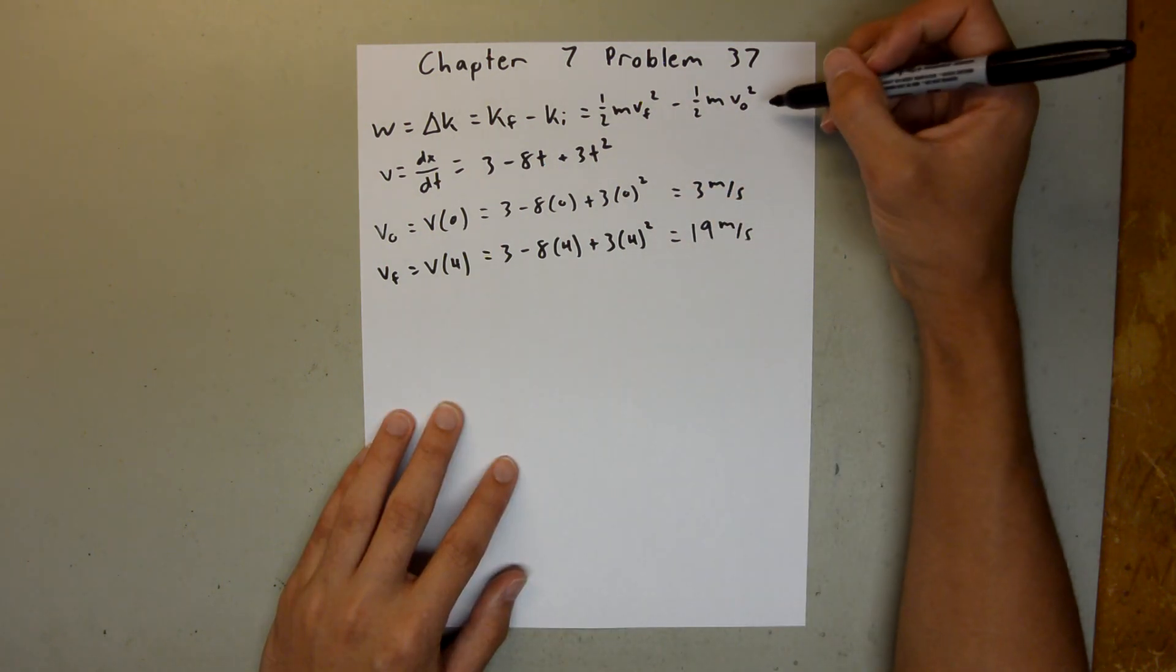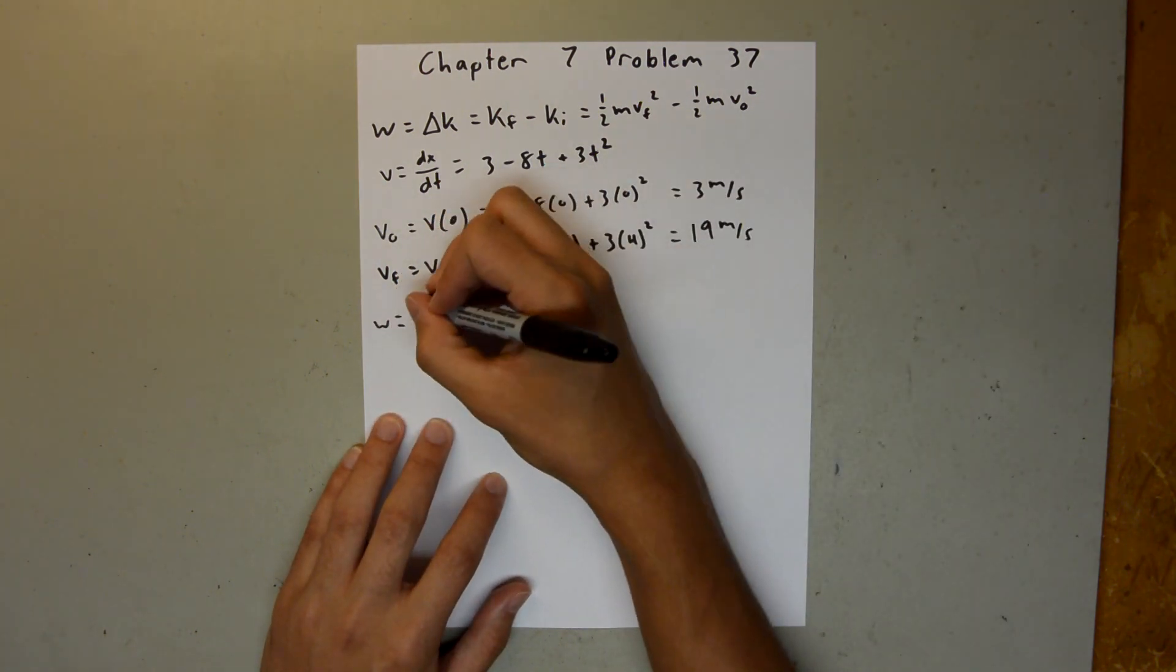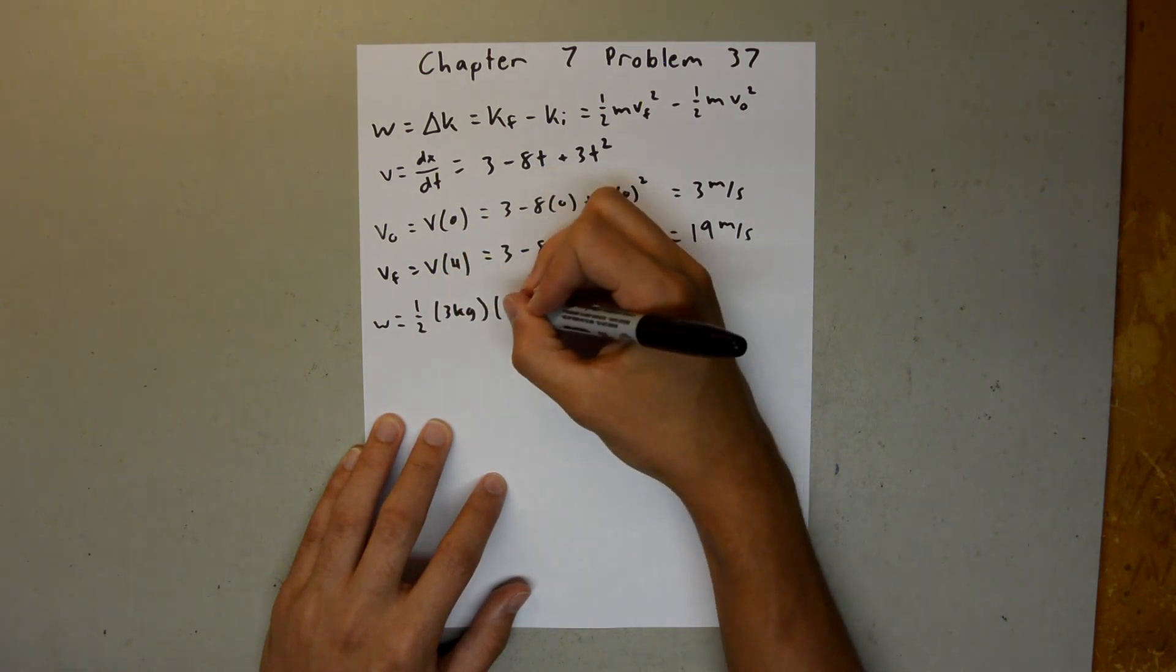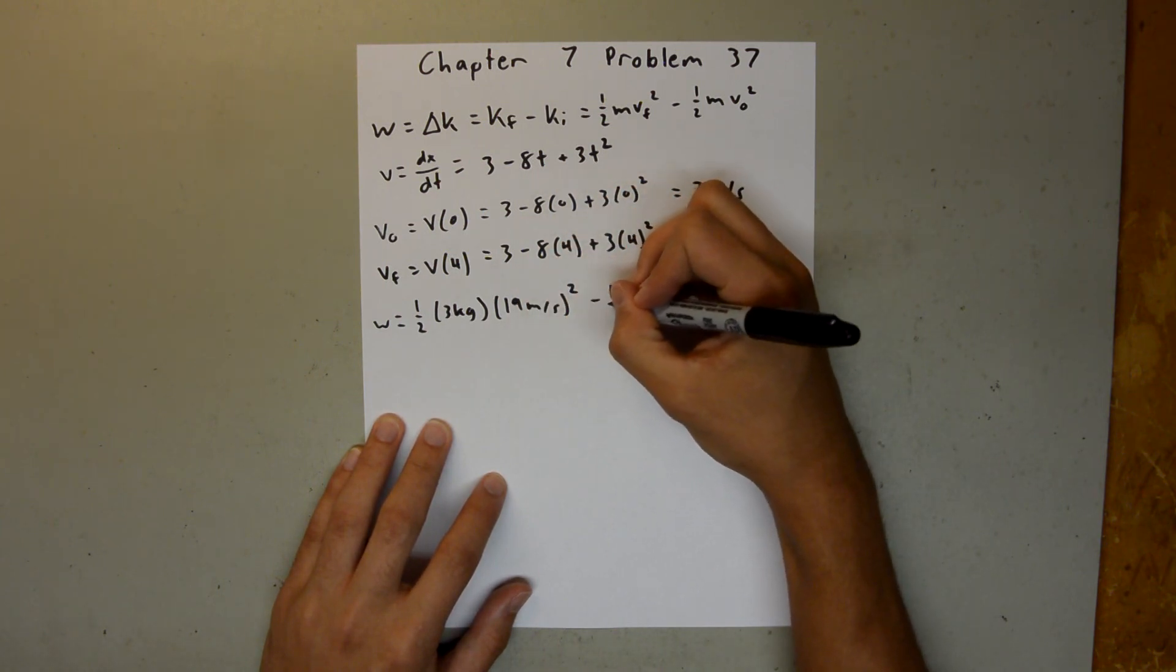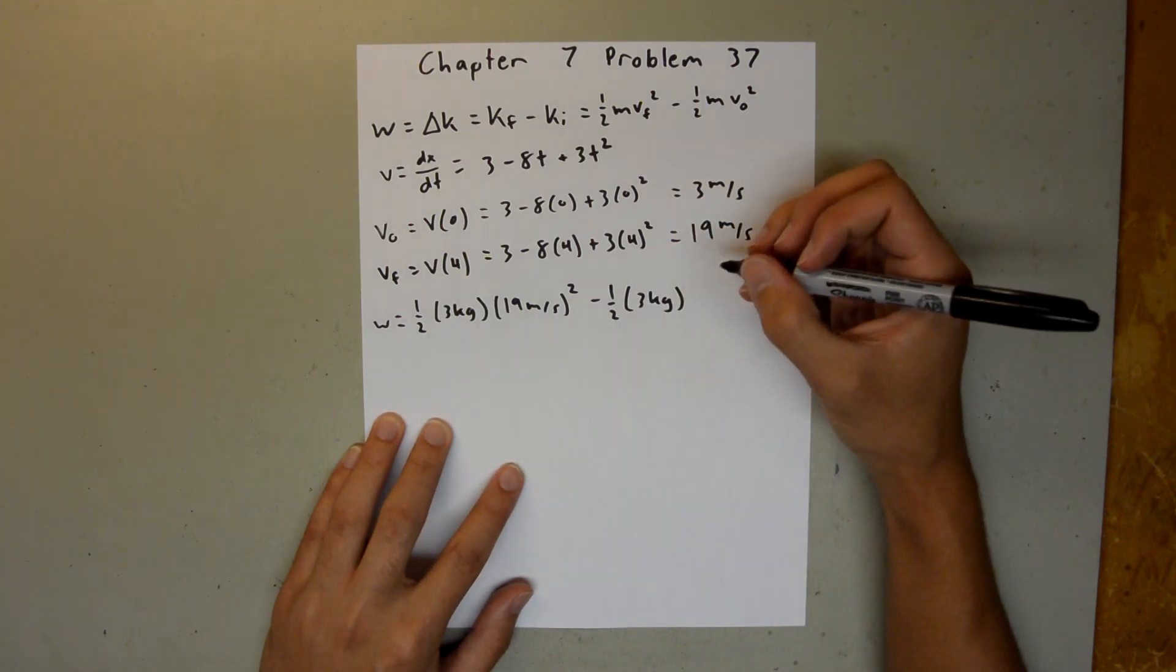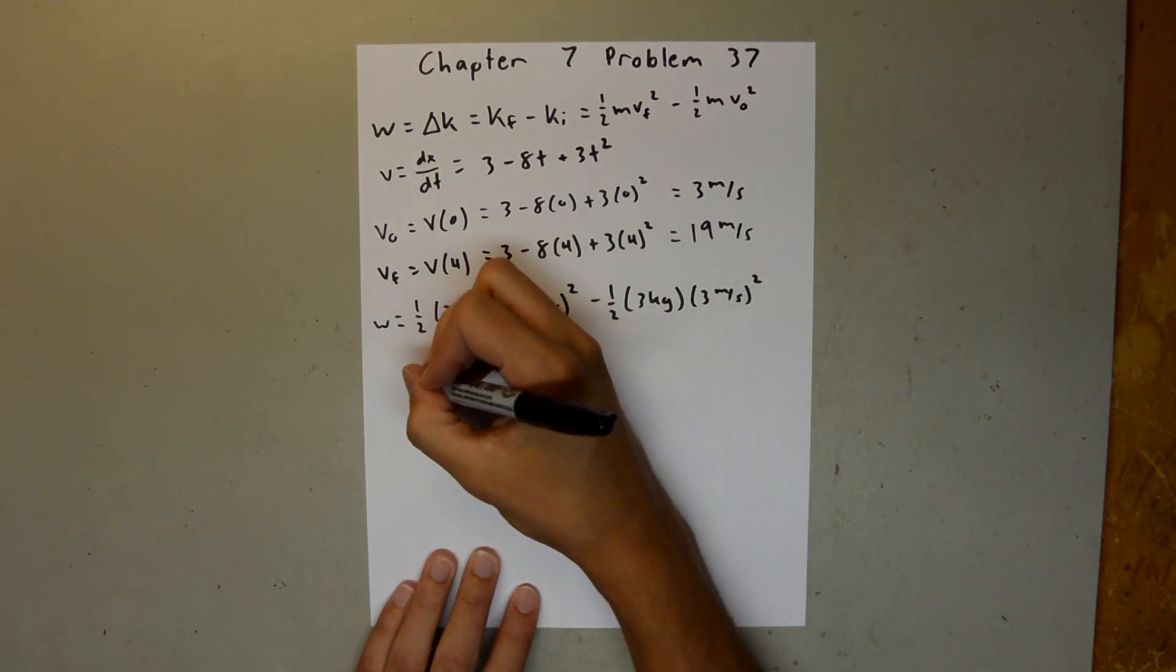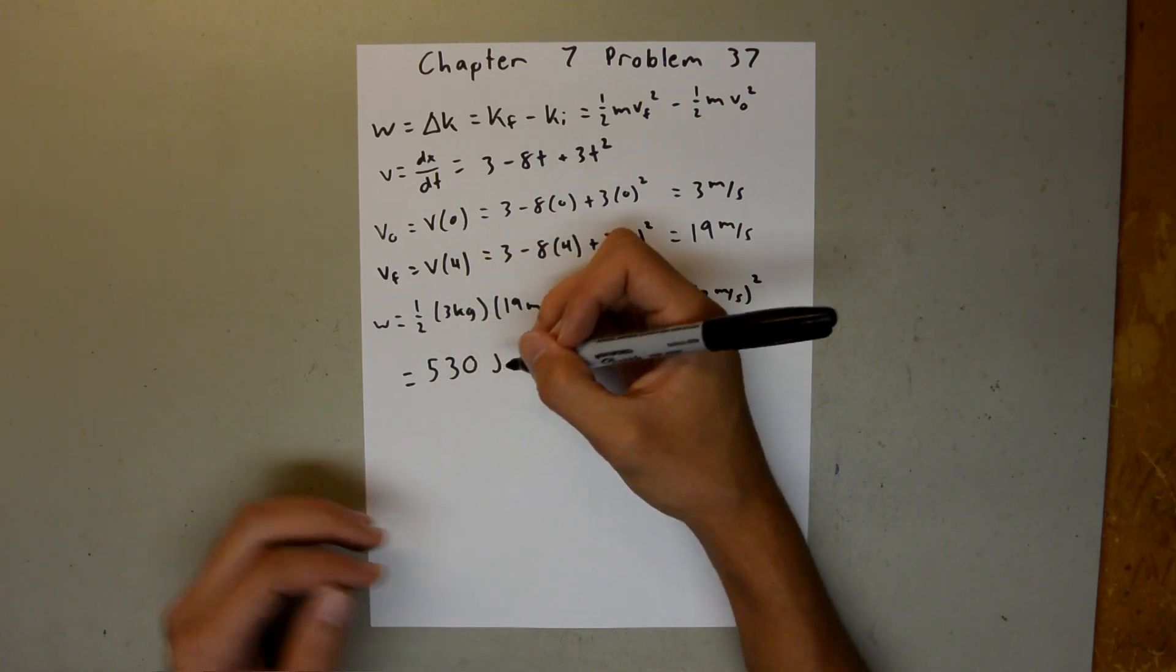And now we have all the values we need to plug into this equation, so we can say work is equal to 1 half, our mass is 3 kilograms, our final velocity is 19 meters per second squared, minus 1 half times 3 kilograms, and our initial velocity is 3 meters per second, and that's squared. And when you plug that into your calculator, you should get about 530, and our unit for work is joules.